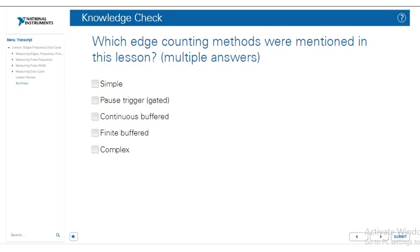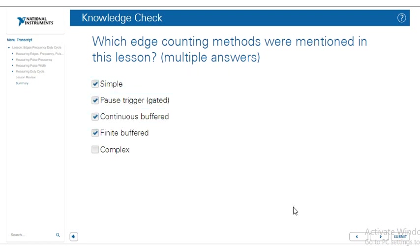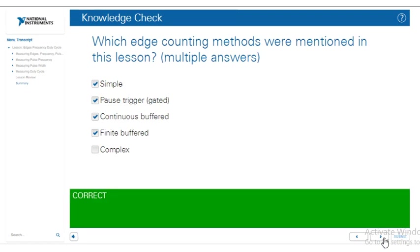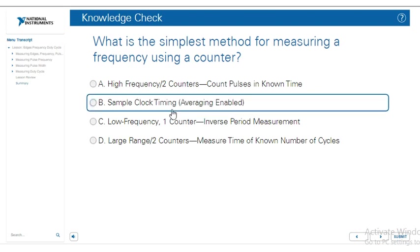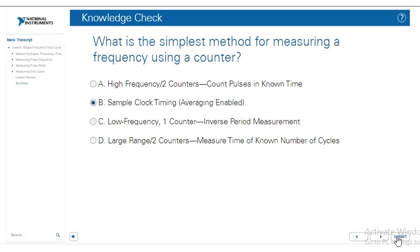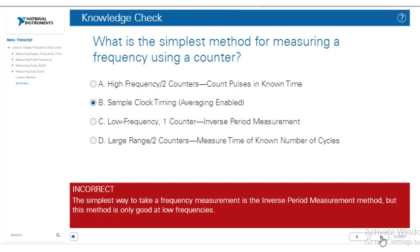Review question: name four ways to count edges. The four ways we talked about to count edges. Also: what is the simplest method for measuring frequency using a counter? The answer is the simplest method for measuring frequency using a counter.